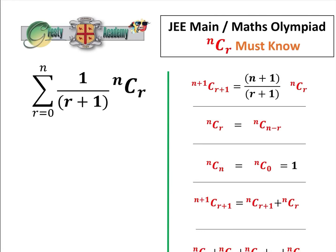Occasionally in JEE Main and Maths Olympiads, you get some rather horrific looking summations. For example, this one here, the sum between r equals 0 and n of 1 over r plus 1 times nCr.